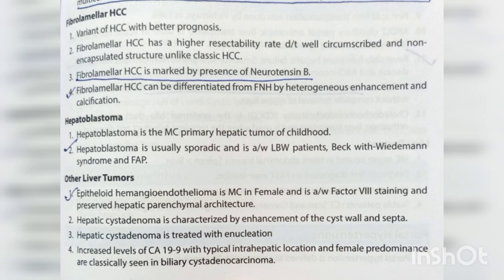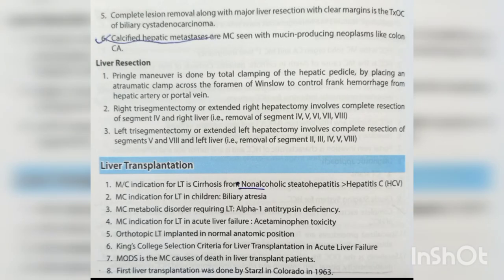Hepatic cystadenoma is characterized by enhancement of the cyst wall and septa and is treated with enucleation. Increased levels of CA 19-9 with a typical intrahepatic location and female predominance are classically seen in biliary cystadenocarcinoma. Complete lesion removal along with major liver resection with clear margins is the treatment of choice for biliary cystadenocarcinoma. Calcified hepatic metastases are most commonly seen with mucin-producing neoplasms like colon carcinoma.